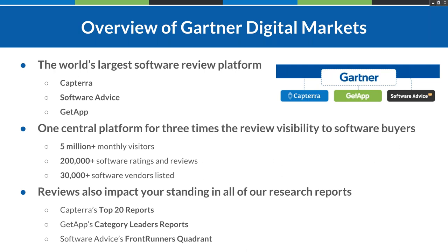Reviews play a role in software research reports released across all three sites — the Top 20 report, Category Leaders, and Frontrunners Quadrant. You can collect reviews often to increase your chances of qualifying for these reports. By recruiting reviews to GetApp, for example, you'll impact your standing in the Capterra Top 20 report for whatever category you're in, since reviews are shared across the entire network.